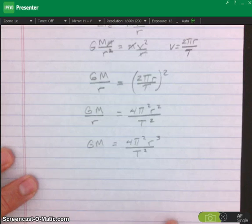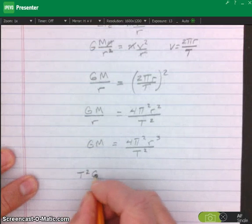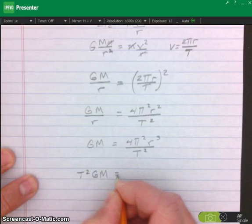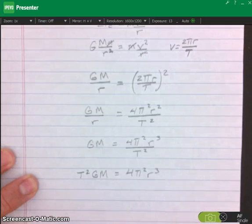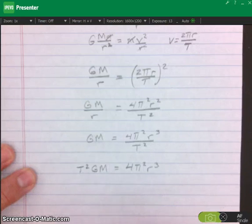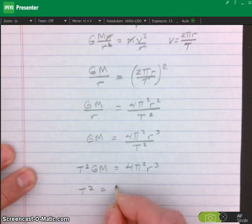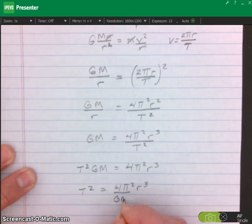Next, I'm going to multiply both sides by the period squared. So I have the period squared times G times big M equals 4 pi squared R cubed. I wanted to solve the equation for T, so I'm now going to divide both sides by GM. And I get that T squared is equal to 4 pi squared R cubed over GM.